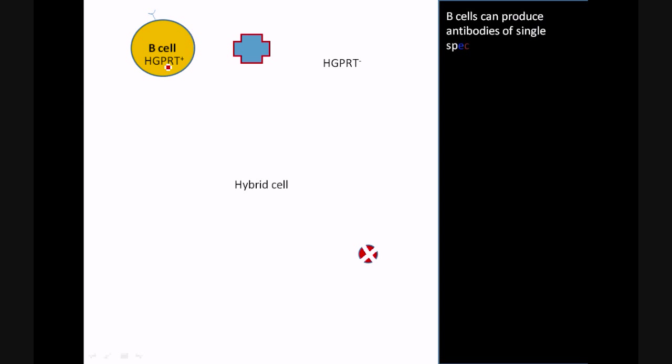In hybridoma technology we are using two types of cells. First is a B cell. B cells are capable of synthesizing antibodies against a specific epitope. The second cell is the myeloma cell or a tumor cell that is capable of continuous proliferation.